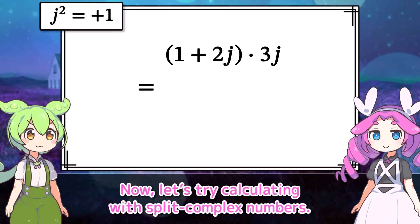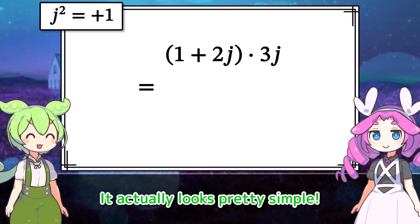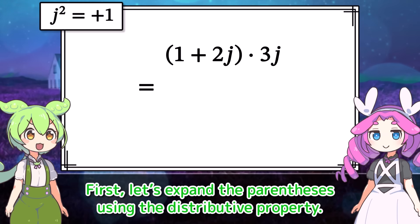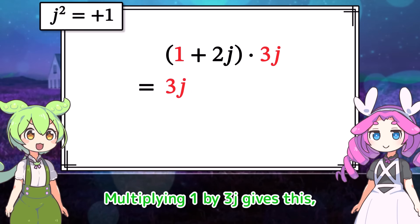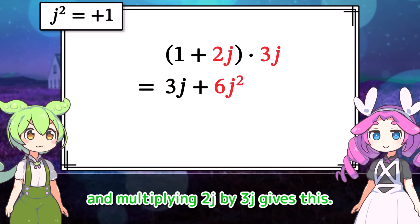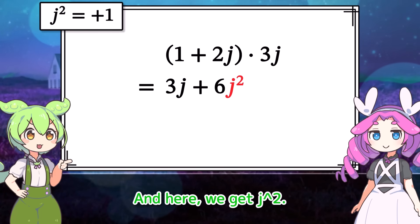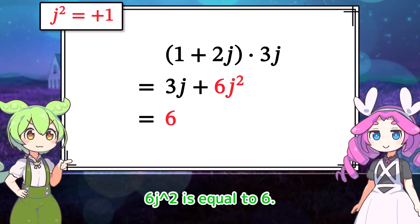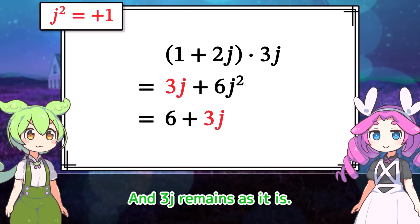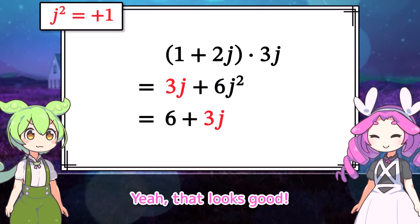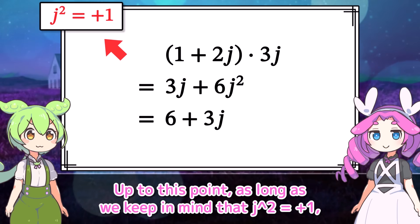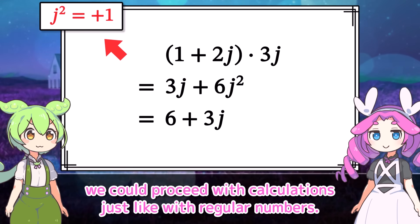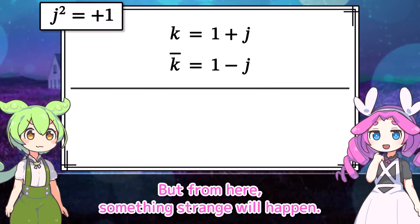Let's try calculating with split complex numbers. First, let's expand the parentheses using the distributive property. Multiplying 1 by 3j gives this. And multiplying 2j by 3j gives this, where we get j squared. Since j squared equals positive 1, 6j squared is equal to 6. And 3j remains as it is. As long as we keep in mind that j squared equals positive 1, we can proceed with calculations just like with regular numbers.